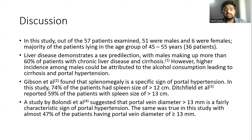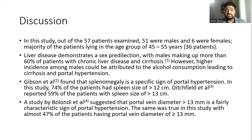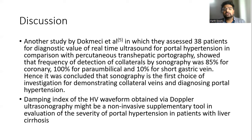Gibson et al. found that splenomegaly is a specific sign of portal hypertension; in this study, 74% of patients also had splenomegaly with spleen size more than 12 cm. Richfield et al. reported 59% of patients with spleen size more than 13 cm. Bolondi et al. suggested that portal vein diameter more than 13 mm is a fairly characteristic sign of portal hypertension, observed in 47% of our patients. A study by Massey et al., assessing 38 patients for diagnostic value of real-time ultrasound compared with percutaneous transhepatic portography, showed frequency of collateral detection by ultrasonography was 85% for coronary, 100% for paraumbilical, and 10% for short gastric vein, concluding that sonography is the first choice of investigation for demonstrating collateral veins and diagnosing portal hypertension.